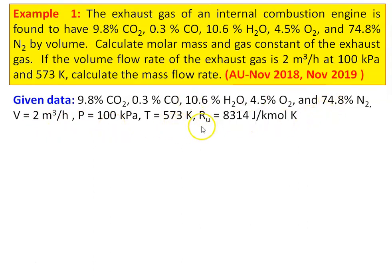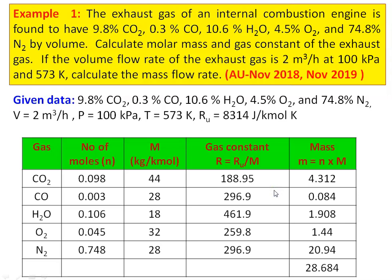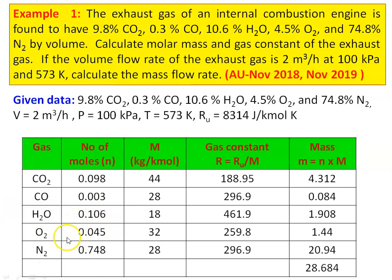We take the universal gas constant Ru = 8314 J/kg·mol·K. This constant is not given in the problem. We prepare a table and calculate various parameters. The first column is gas constituents, the second column is the number of moles — since we are given percentages, dividing by 100 gives the moles. So CO2 = 0.098, CO = 0.003, H2O = 0.106, O2 = 0.045, and N2 = 0.748.